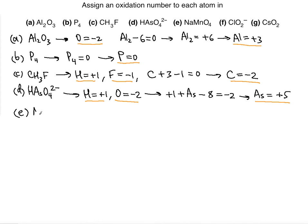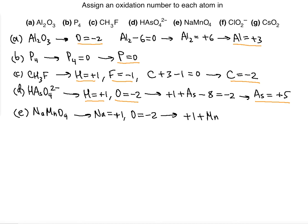Part E has sodium, manganese, and oxygen. Which one takes precedence? Sodium — because sodium is a group 1A element. Just like hydrogen, the sodium oxidation number is plus 1. The next rule that follows is oxygen, which is minus 2. Then we can solve for manganese. This is an atomic compound, not ionic, so the overall charge is 0.